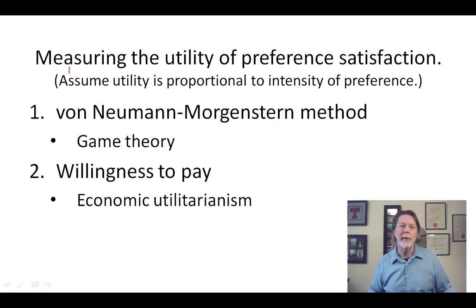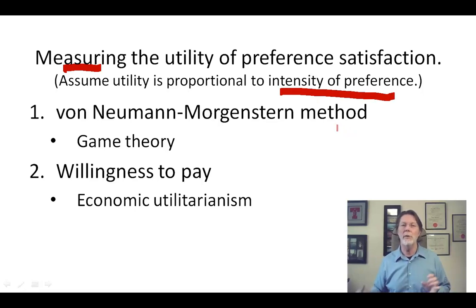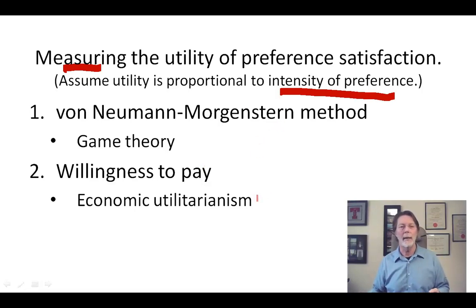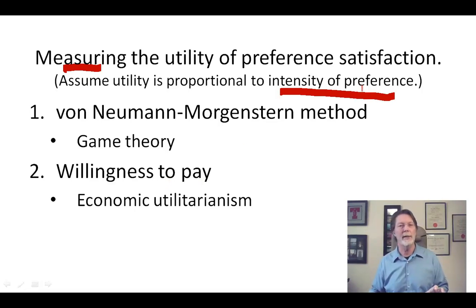This idea of measuring the utility of preference satisfaction — if we assume that utility is proportional to the intensity of the preference, there seem to be two ways to measure this intensity. One is the von Neumann-Morgenstern method, which was originally employed in game theory. The other is the willingness-to-pay idea, which is employed in the topic of the next segment: economic utilitarianism.